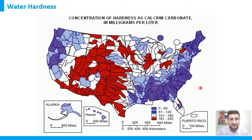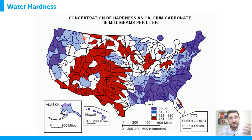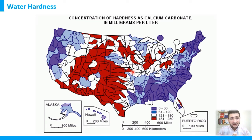In the United States, some areas in the eastern part have very soft water — hardness below 60 mg/L as CaCO3 — while other areas have very hard water exceeding 180 mg/L as CaCO3, shown in red on the map. Even within the same state or city, hardness can range from soft to more than 200 mg/L as CaCO3.